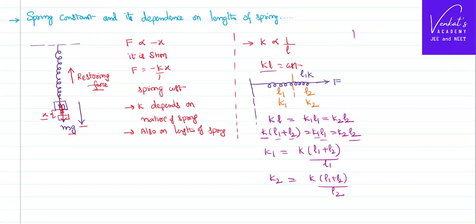Thus spring constants can be found depending on how these springs are cut. Let's say as an example, if the spring is cut in the middle, what does that mean? The total length is L, it is divided into two parts, L by 2 and L by 2.